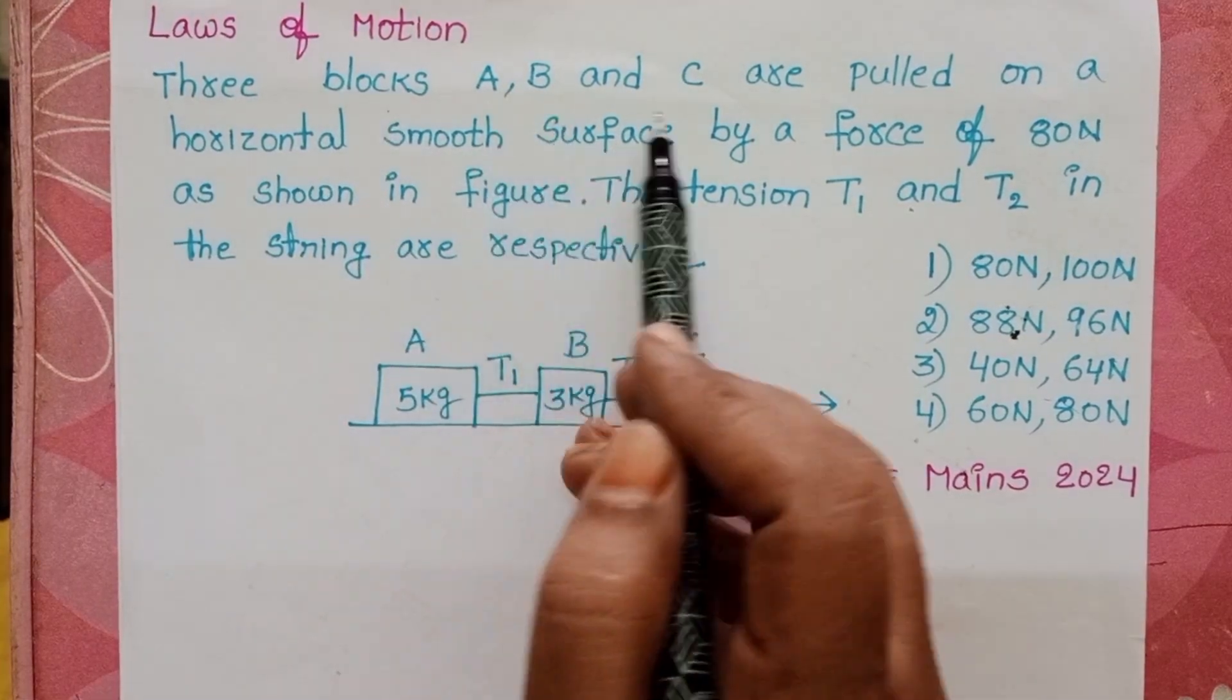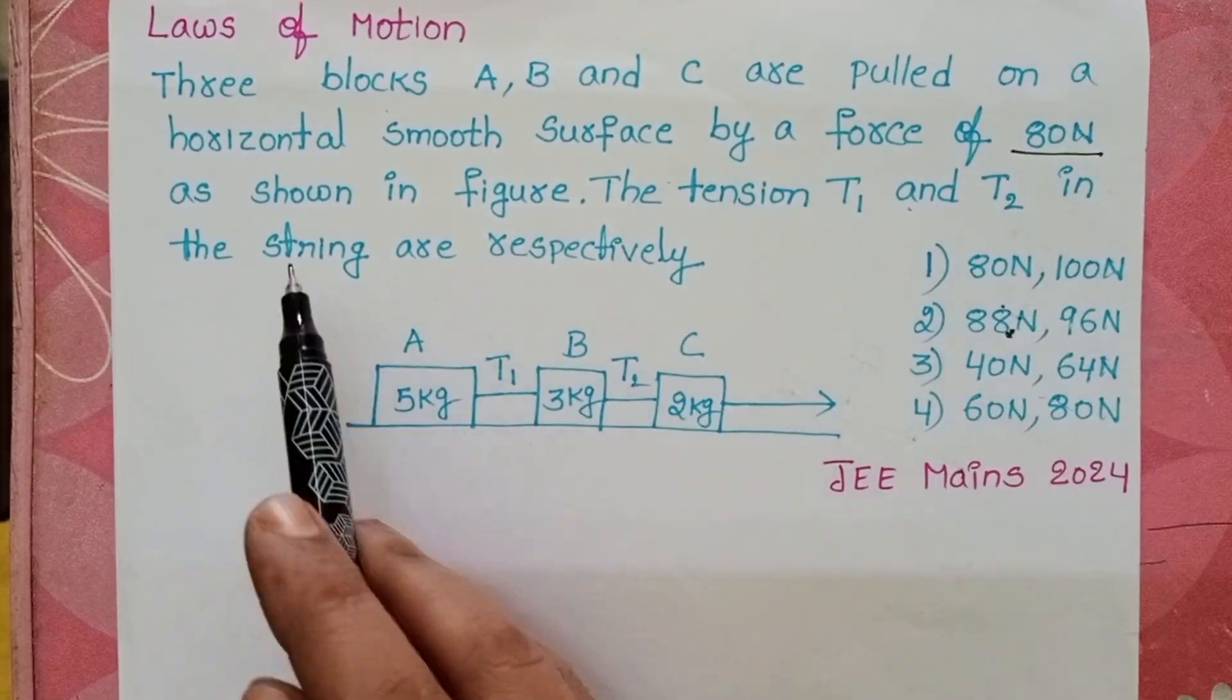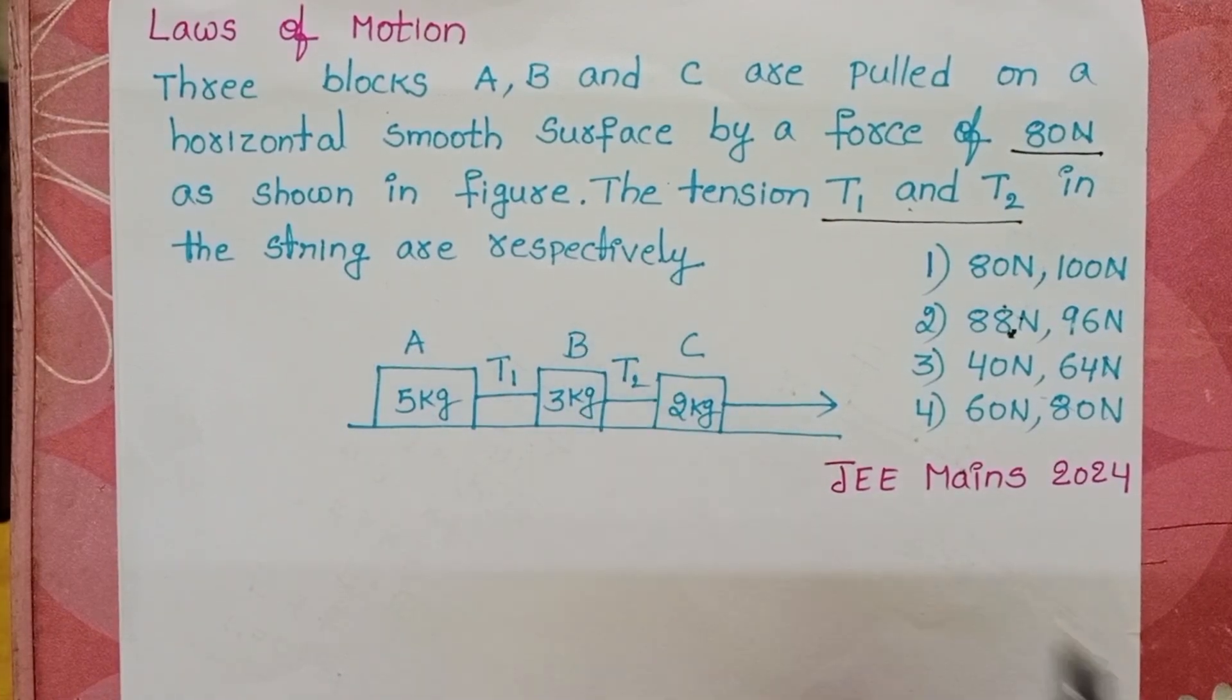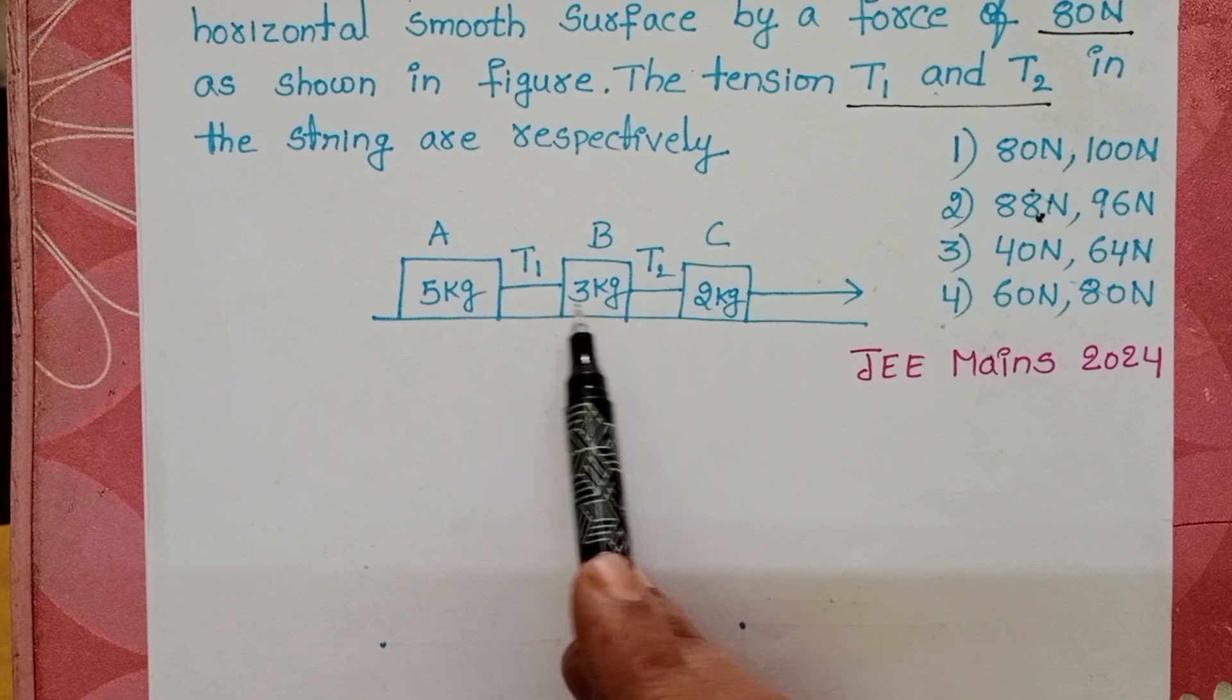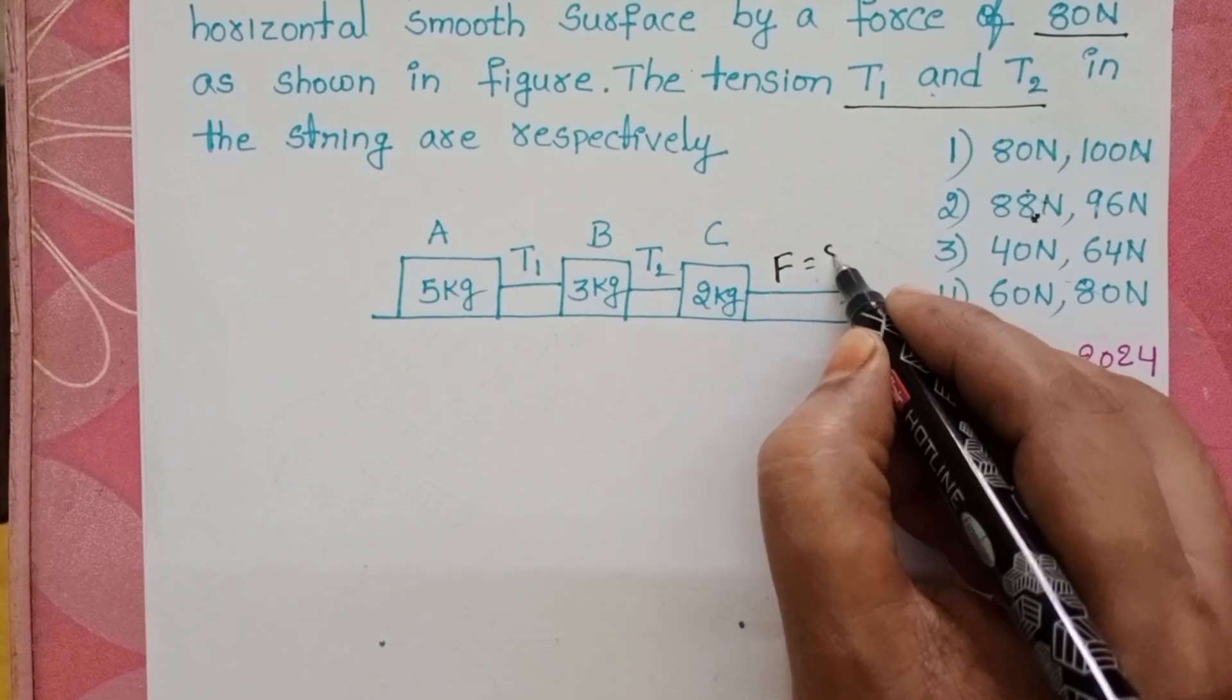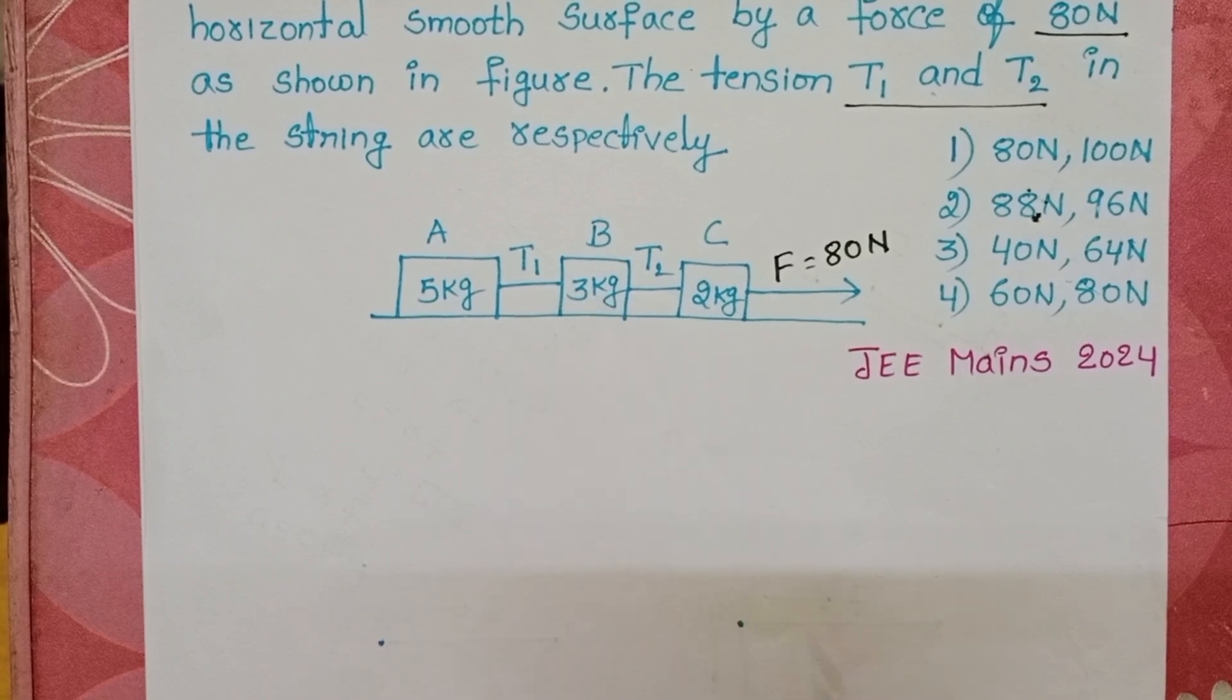Three blocks A, B and C are pulled on a horizontal smooth surface by a force of 80 N as shown in the figure. The tension T1 and T2 in the string are respectively. These three blocks are connected with the help of two strings and force is applied on the 2 kg mass. Here applied force is equals to 80 N. We have to find out the tensional forces T1 and T2.